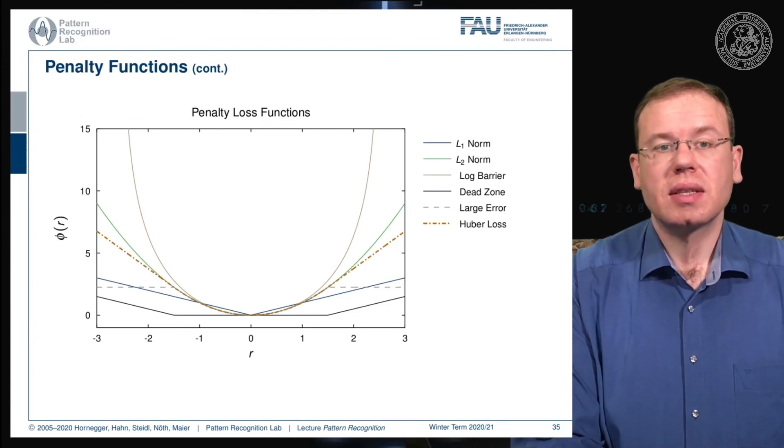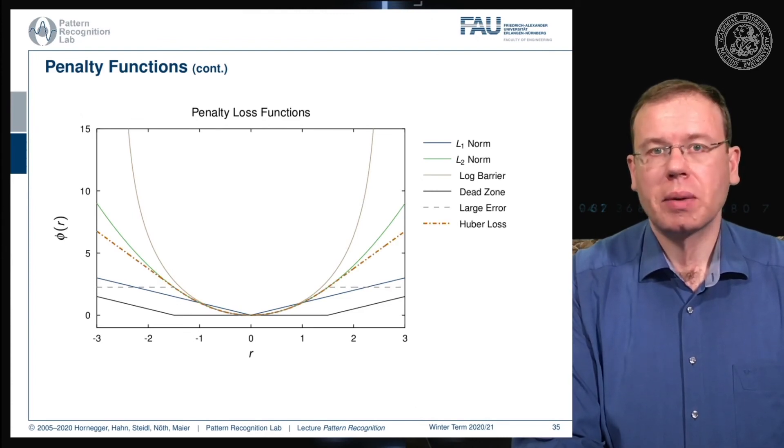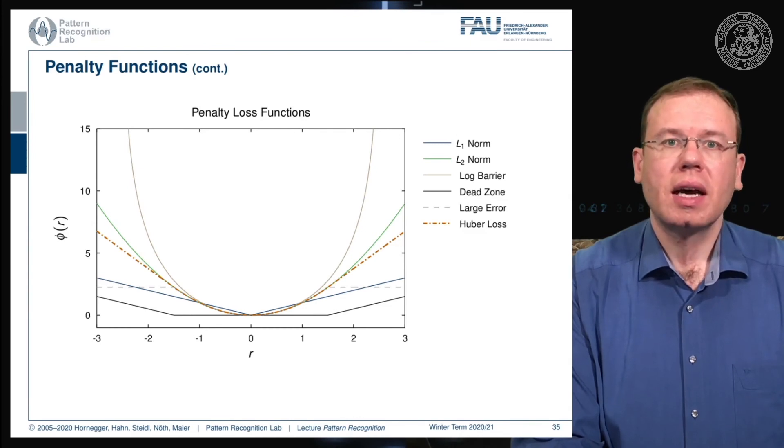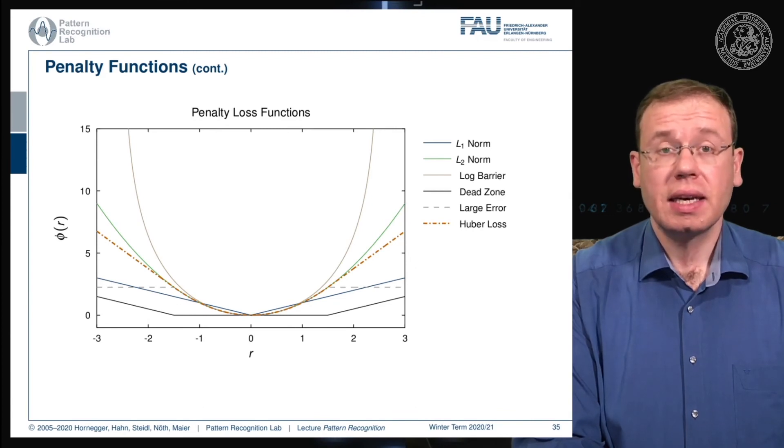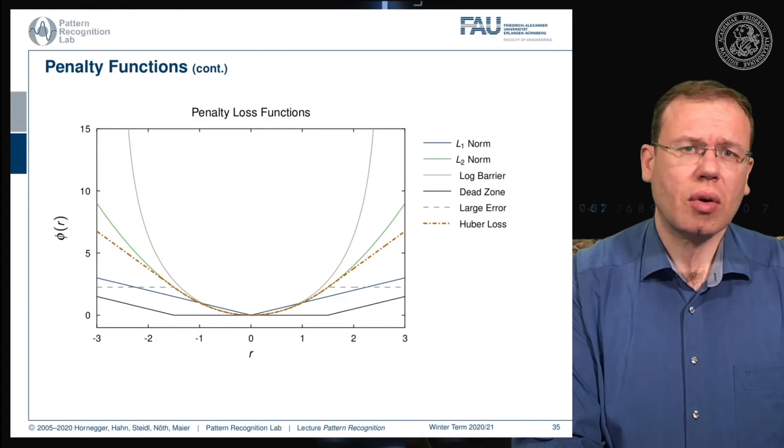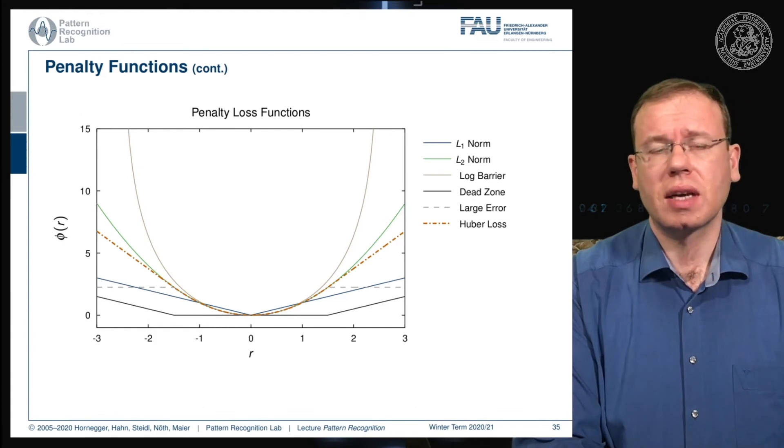This is the Huber loss. The Huber loss is very popular or was very popular as an approximation of the L1 norm with a continuous derivative. This has been used widely in literature. Today you don't find it as often because most of the time people are simply using the respective L1 norm and shrinkage methods to solve the problem.